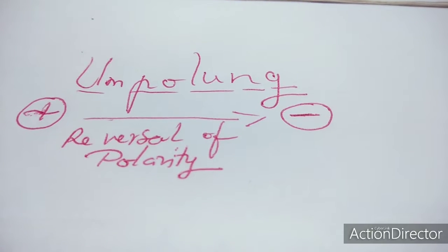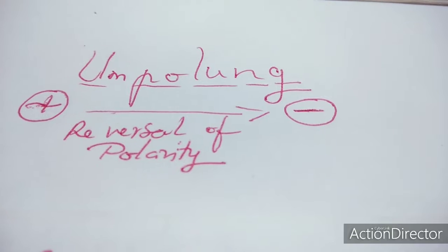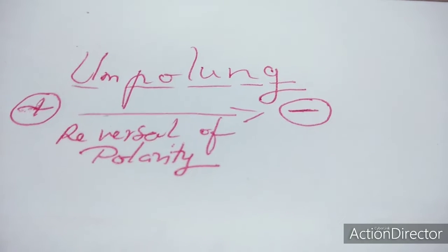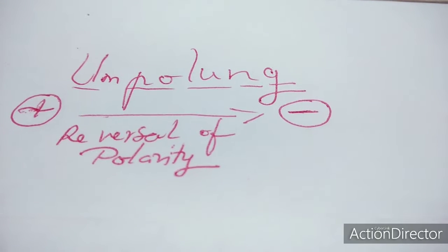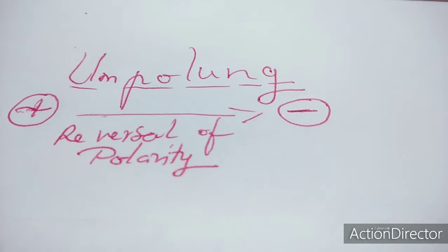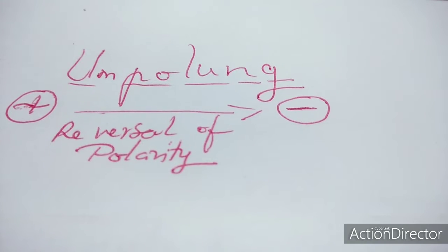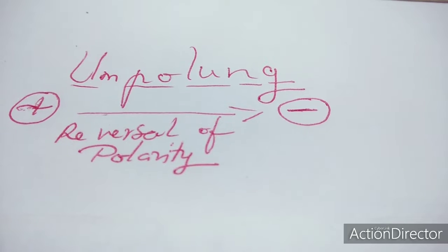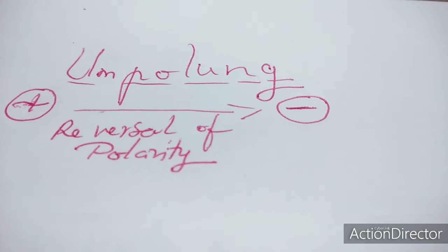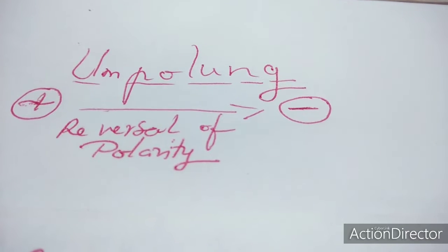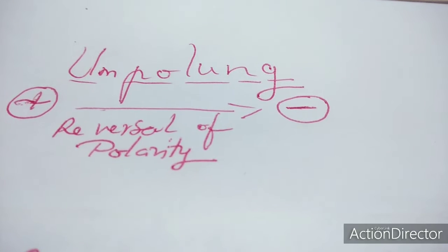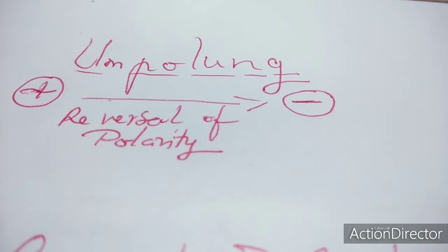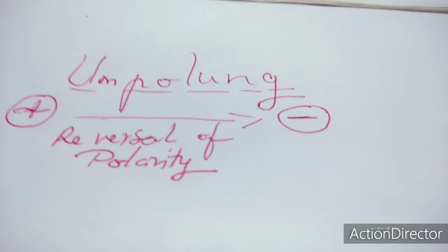Welcome to this class on Umpolung. Till now we were dealing with retrosynthesis, that is synthesis in the reverse order. Umpolung similarly is polarity in reverse. The normal way for two compounds to react is when they have opposite polarity — new carbon-carbon bonds are formed by aldol reaction, Diels-Alder reaction, Michael reaction, etc. One molecule reacts with the other having opposite polarity.